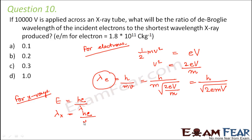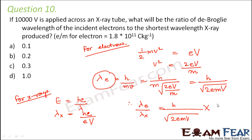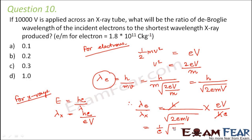This energy is charge into the potential difference. Therefore, the ratio λ_e / λ_X = [h / √(2emV)] divided by [hc/eV], which equals eV/hc × h/√(2emV). The h's cancel, leaving us with (1/c) × √(eV/2m).